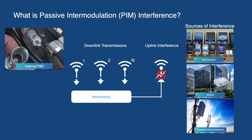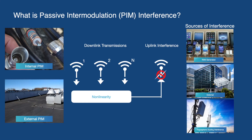The PIM nonlinearities can come from internal sources between the RF hardware and antenna, such as degraded connectors, faulty feeders, faulty switches, or corroded RF cabling. The PIM nonlinearities can also come from external sources located near the antennas at a site. These sources can include rusty or corroded bolts, joints, and metallic plates. In this case, downlink transmissions from other operators sharing the same site can contribute to the PIM interference.